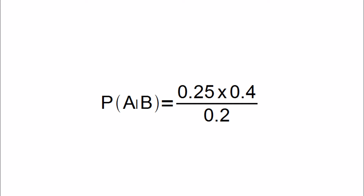So the probability of passing the exam given that you took the course is equal to the probability of taking the course given that you passed the exam — which is 0.25 — times the probability of passing the exam — which is 0.4 — all divided by the probability of taking the course — which is 0.2. So in this case Bayes' theorem gets the right result, but it's rather a roundabout way of doing it.